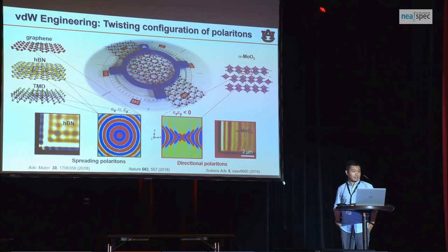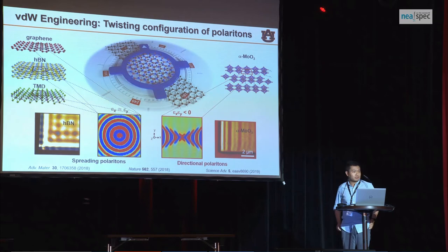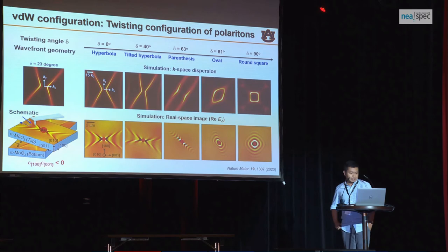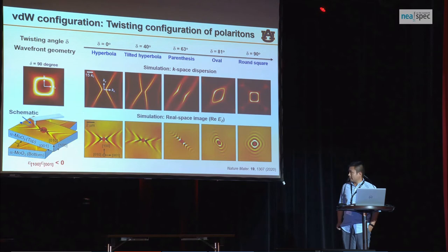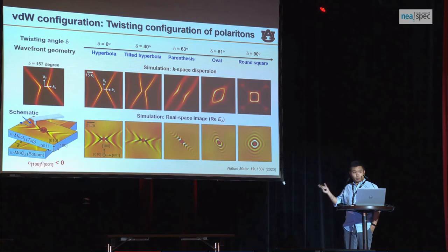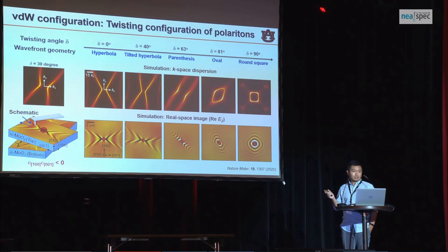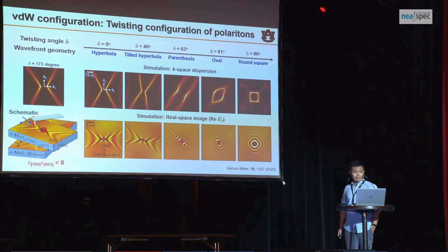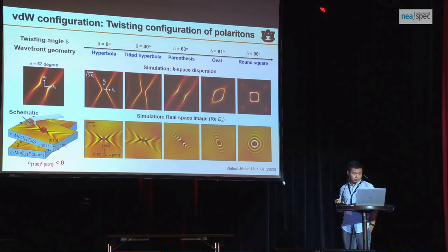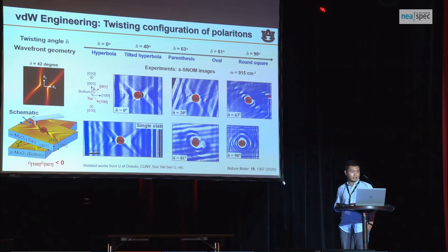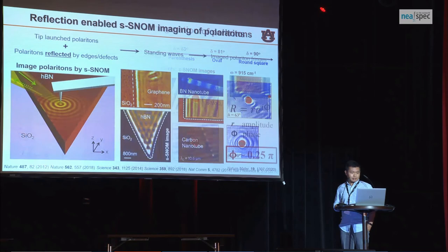However, MoO3, being highly anisotropic even in-plane, provides this opportunity because its isofrequency contour is X-shaped. So if you twist two MoO3 slabs, it actually makes a difference. We started from theoretical calculations of MoO3 bilayers at various twisting angles — not moiré, because we did not form a superlattice, just electromagnetic interaction. From zero to 90 degrees, the wavefront is unique at each angle, as shown in k-space and real-space simulations. Our experiments match the simulations quite well, confirming that the wavefront can be configured by controlling the twisting angle between two MoO3 slabs.